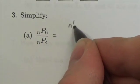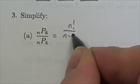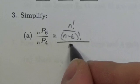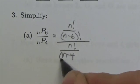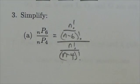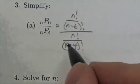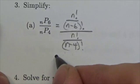This is going to end up being n factorial over n minus 6 factorial divided by n factorial over n minus 4 factorial. Now that, because it's a complex fraction here, it's not going to make this easy on myself.